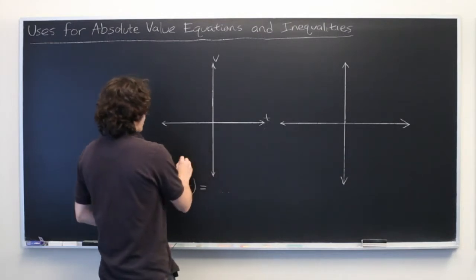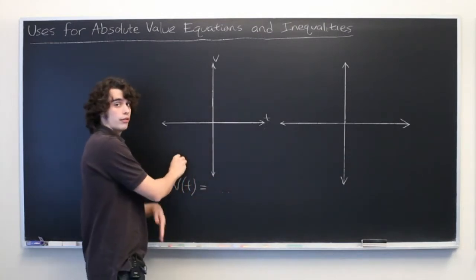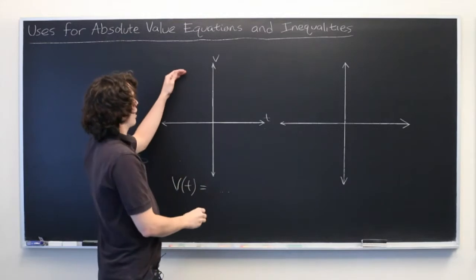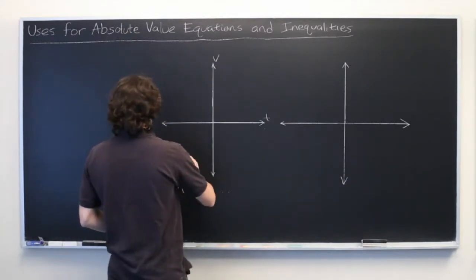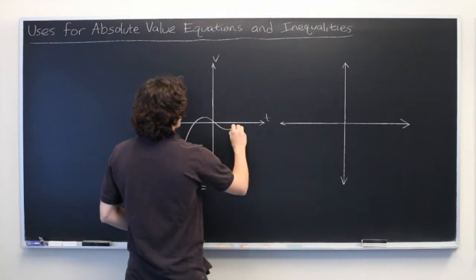Where negative values indicate that the car is traveling south and positive values indicate that the car is traveling north. Maybe it would look something like this.